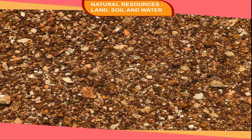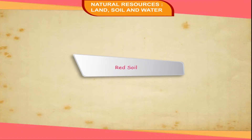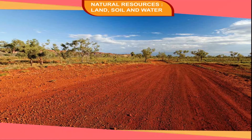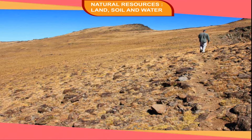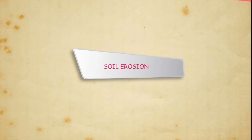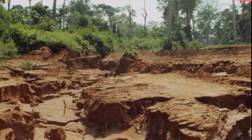Laterite soil is found in patches on the Deccan Plateau and Western Ghats where rainfall is heavy. It is poor in quality. Red soil is found in the western part of the peninsular plateau; it is reddish in color and not very fertile. Mountain soil is an undeveloped soil found in the Himalayan region.